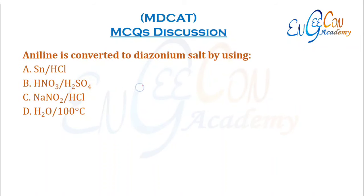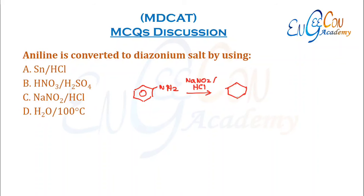Aniline is converted into diazonium salt by treatment with NaNO2 and HCl. This reaction converts aniline into the corresponding diazonium salt. C is the correct option.